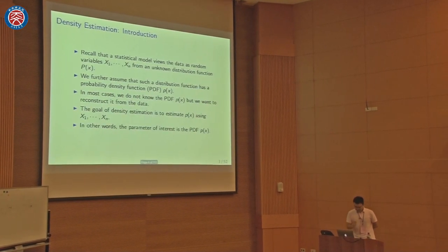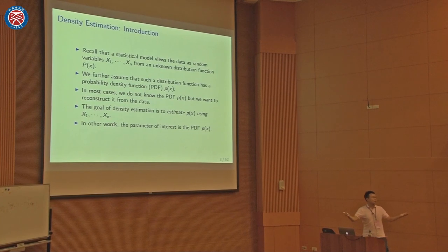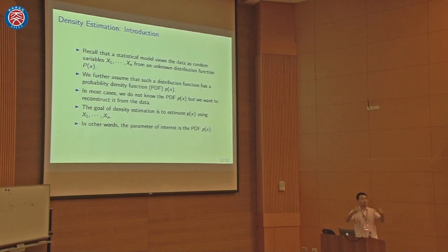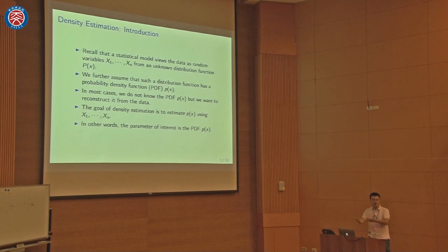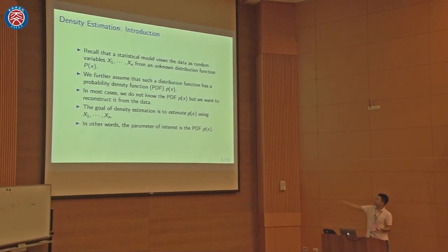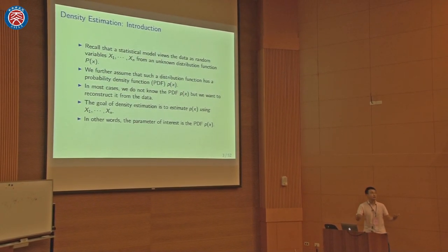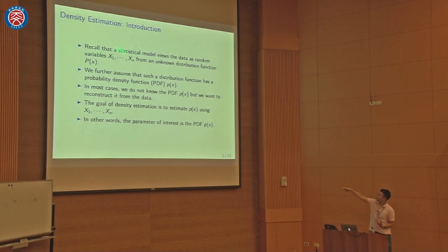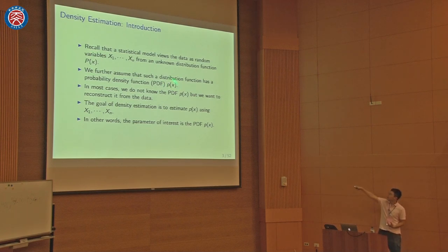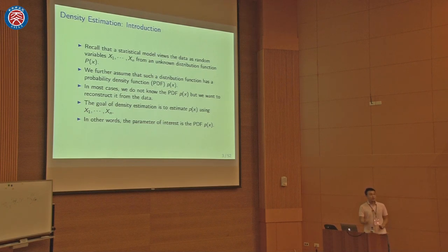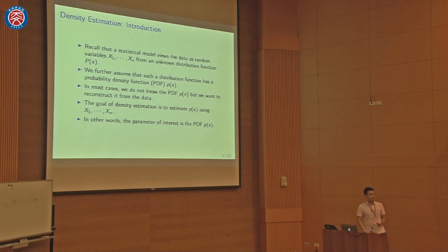In most cases we don't know the density function, because if we did, we would know almost all information about the population — and that's not the real case. In practice, we only observe the data, and both the distribution function and the density function are unknown to us. We want to use the data to infer the density function. In other words, the parameter of interest in this case is the PDF.